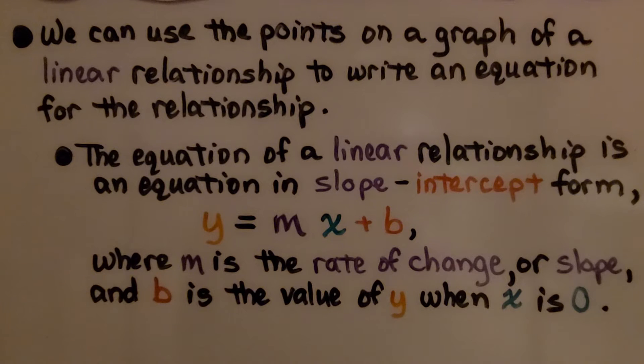The equation of a linear relationship is an equation in slope-intercept form, y equals mx plus b, where m is the rate of change or slope, and b is the value of y when x is zero. It's where the line crosses the y-axis.